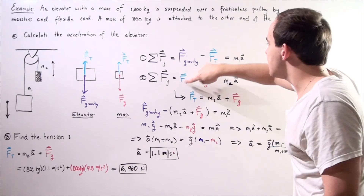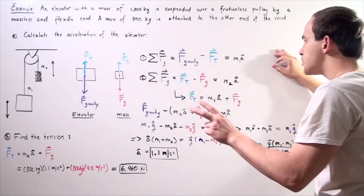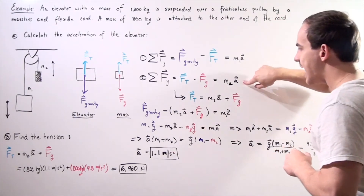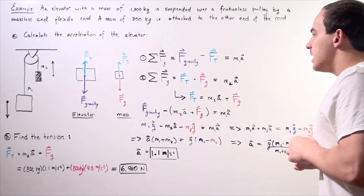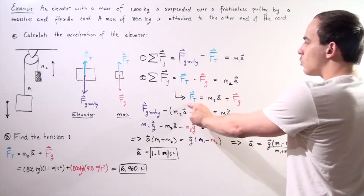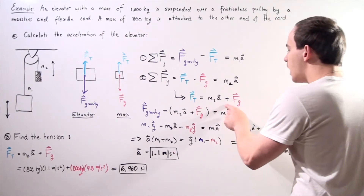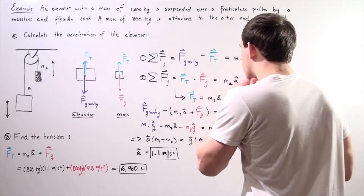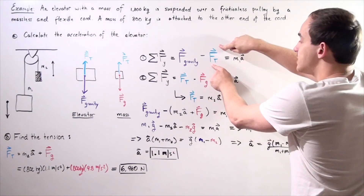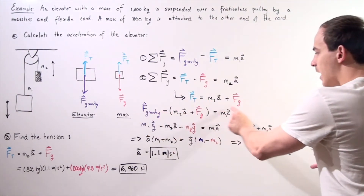Notice that each equation has two unknowns: A and the tension. Because the cord is massless and the pulley frictionless, the tension is the same on both ends. Taking equation two and rearranging, we solve for tension: T equals M2 times A plus the gravitational force on object two. We then substitute this expression for tension into equation one.